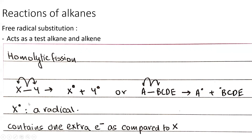Homolytic fission is when a covalent bond splits in half. A covalent bond has two electrons shared between X and Y. In homolytic fission, it splits so X gets one electron and Y gets one electron, forming an X radical and a Y radical.